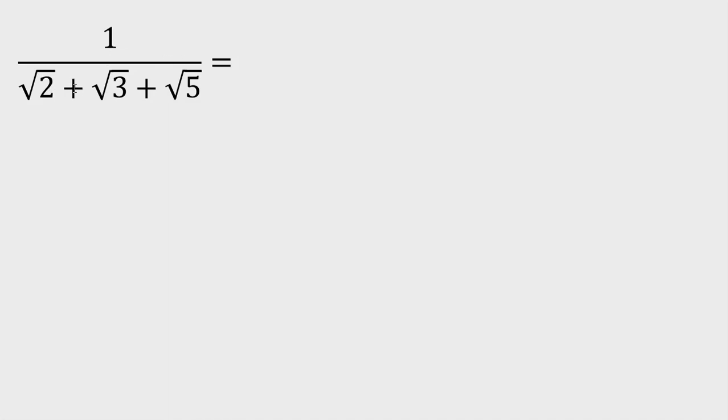1 over square root of 2 plus square root of 3 plus square root of 5. We want to rationalize this. Means what? We want to reach an expression and a term that doesn't contain square root in the denominator.